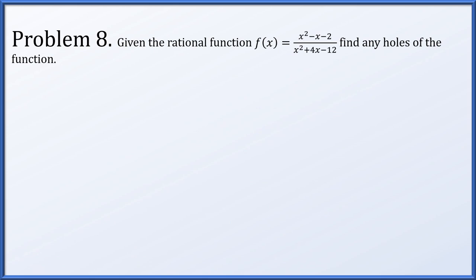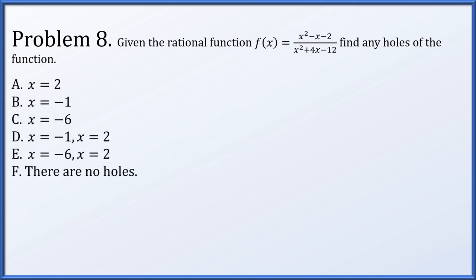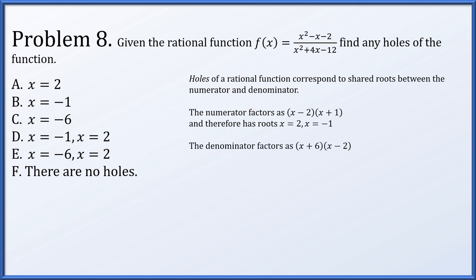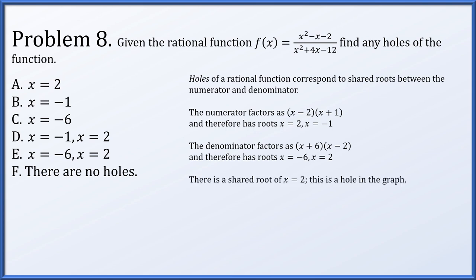In problem 8, suppose f(x) equals (x squared minus x minus 2)/(x squared plus 4x minus 12). Find if this function has any holes. Rational functions have holes when there are shared roots between numerator and denominator. The numerator factors as (x minus 2)(x plus 1) with roots x equals 2 and x equals minus 1. The denominator factors as (x plus 6)(x minus 2) with roots at minus 6 and 2. There is a shared factor of (x minus 2), giving a hole in the graph at x equals 2.